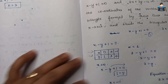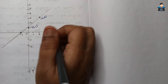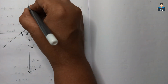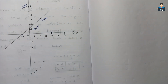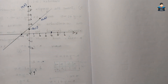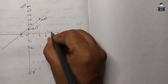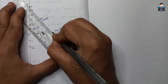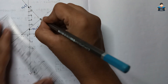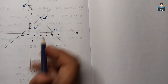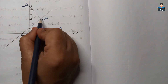For equation 2, the first value is (0, 6) — plotting this point. The second value is (2, 3). The third point is (4, 0). Joining these three points gives the line for equation 2. Now we can see one triangular region formed. We shade the triangular region.